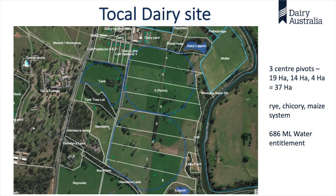We are about here on the map. Here's one of the pivots — it's a small one; here's another, a bigger one; and this is the biggest of them. We'll have a quick look at them at the farm walk, just from a height. So there are three pivots of three different sizes: 19 hectare, 14 hectare, and 4 hectare — a total of 37 hectares.